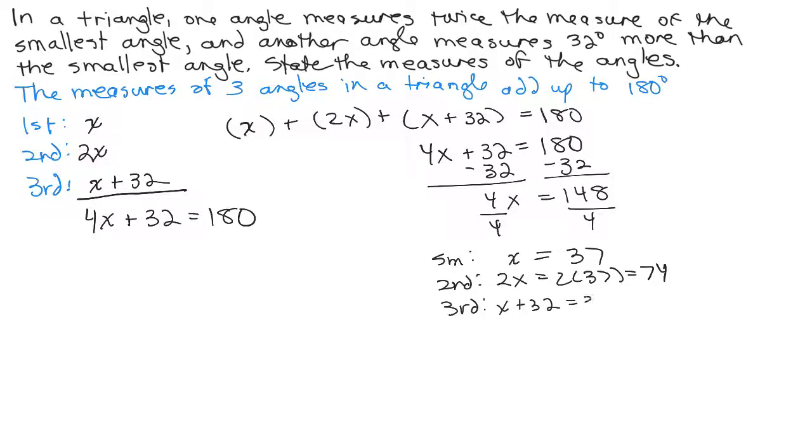And the last one, X plus 32. If X is 37, then 37 plus 32 is 69. Now, those are the measures of the degrees. Let's see if that makes sense. If one of them was 37 degrees and the other one was 74 degrees and another one was 69 degrees, does that add up to 180 degrees?